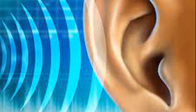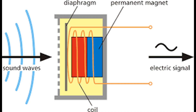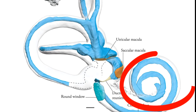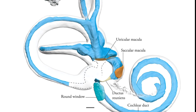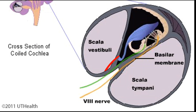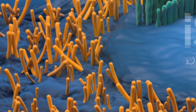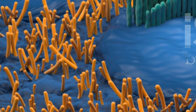Auditory transduction is the remarkable process of converting sound waves into electrical signals that our brains can understand. It all happens within the cochlea of the inner ear. Those vibrations passed along by the middle ear bones create waves within the fluid-filled cochlea. Inside the cochlea lies the basilar membrane, a flexible structure lined with thousands of tiny hair cells. As the fluid waves travel through the cochlea, they cause the basilar membrane to vibrate.